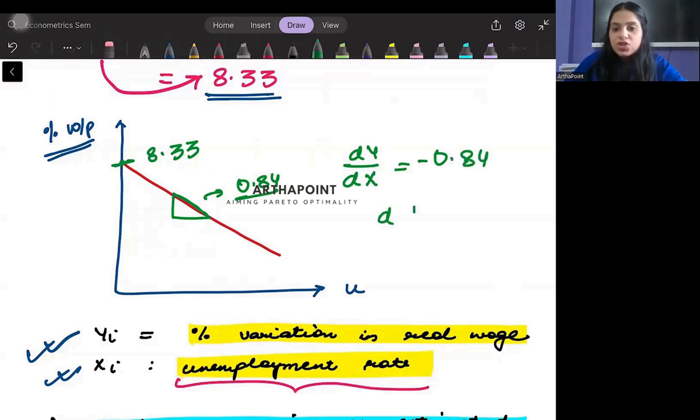Y represents the percentage change in real wages and x represents the unemployment rate and this is minus 0.84. Am I clear with that part?